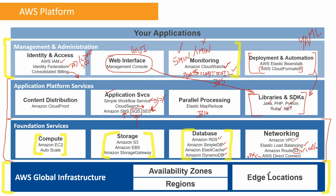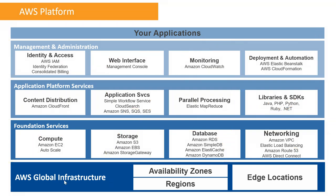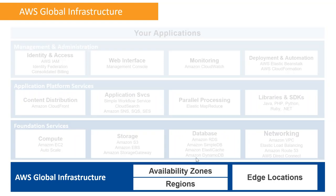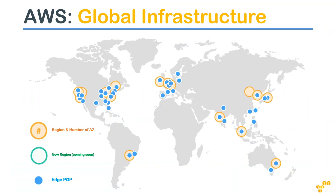Let's now look at the global infrastructure in detail. We didn't cover the bottom layer earlier, but I have some diagrams that will explain what a region is and what an availability zone is more clearly than just describing it here. Let's go ahead and look at the global infrastructure.